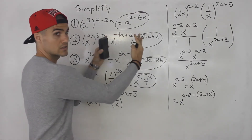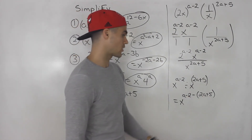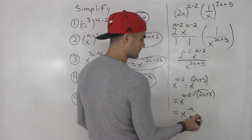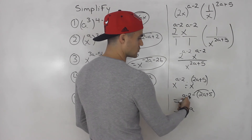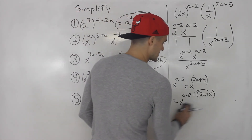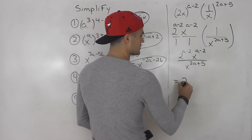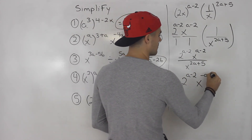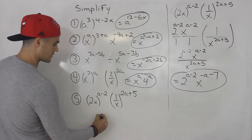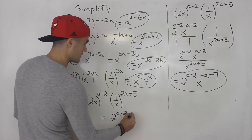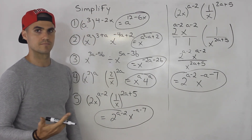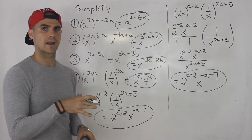These ones are a bit trickier because they have variables in the exponents, but the same general rules still apply that were mentioned in the first section.